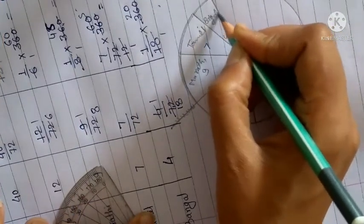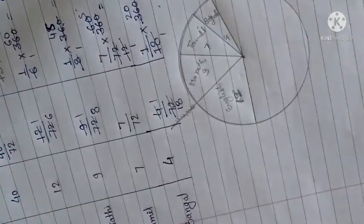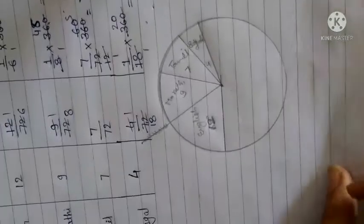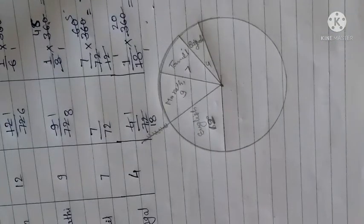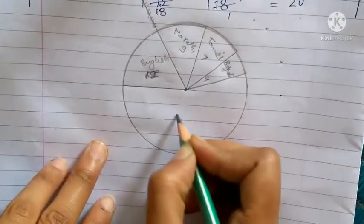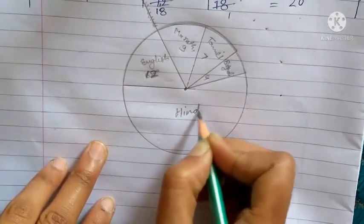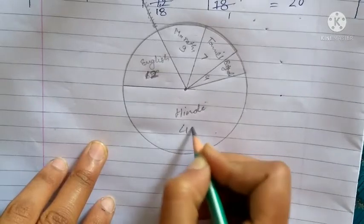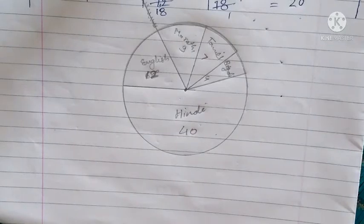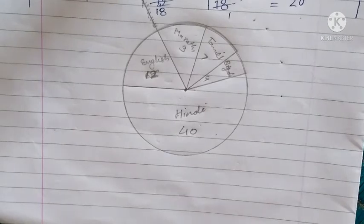Bengali spelling and sign. This 200 degree sector is Hindi — 40 students. So this is the pie chart. You have to make this. This exercise is now completed. Write this exercise in your classwork copy.